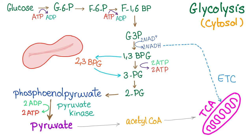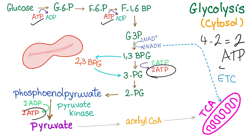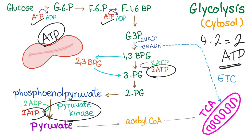Let's count the ATP here. We have used 2 ATP, and we have generated 4 molecules of ATP. So 4 minus 2 equals 2 molecules of ATP — we have gained 2 molecules of energy. The red blood cell is happy, thanks to pyruvate kinase. Imagine what will happen in case of pyruvate kinase deficiency: there is no ATP for the red blood cell. That's why pyruvate kinase deficiency wreaks havoc on the red blood cell.